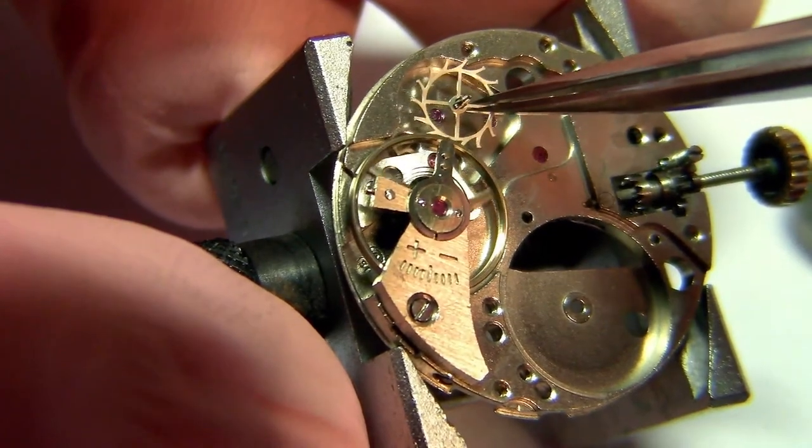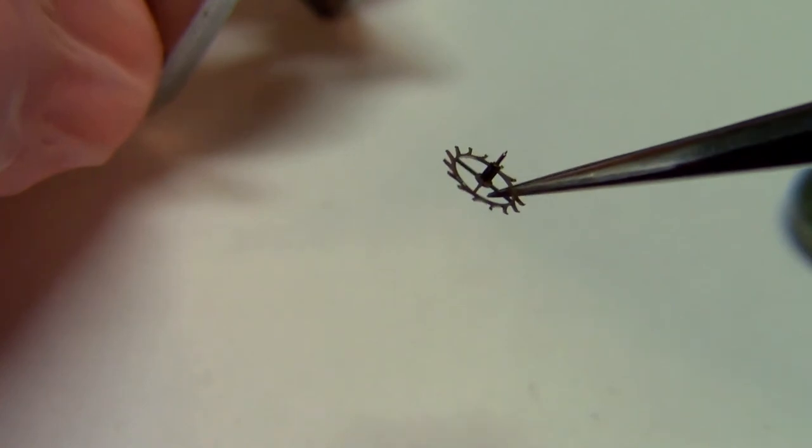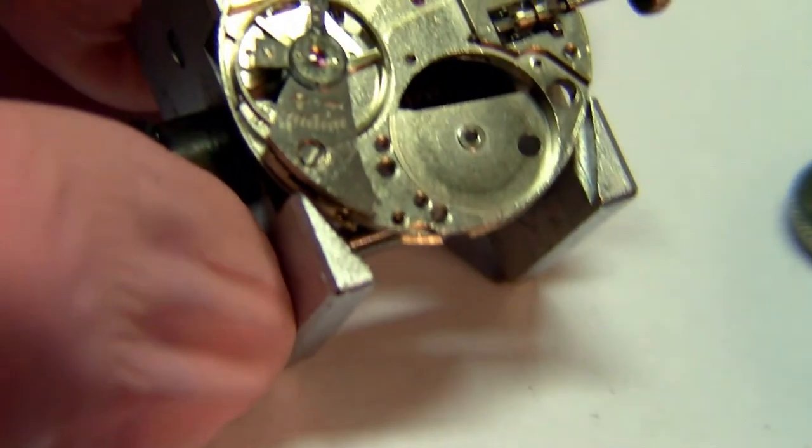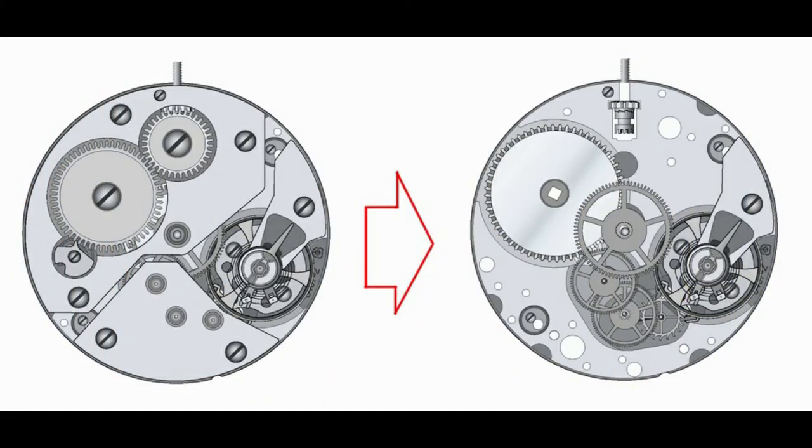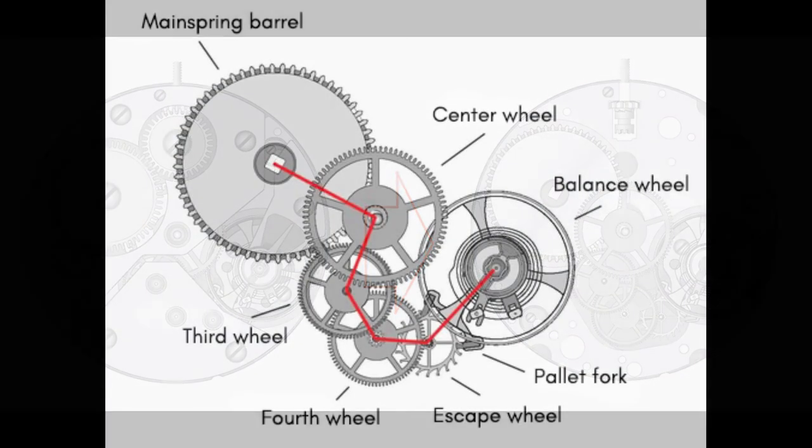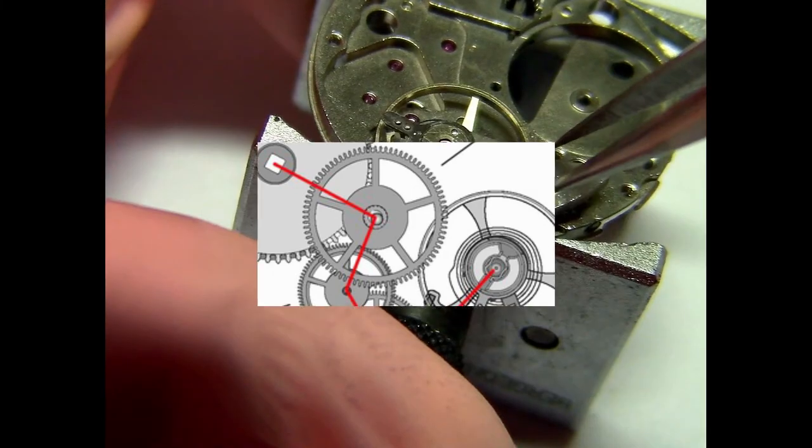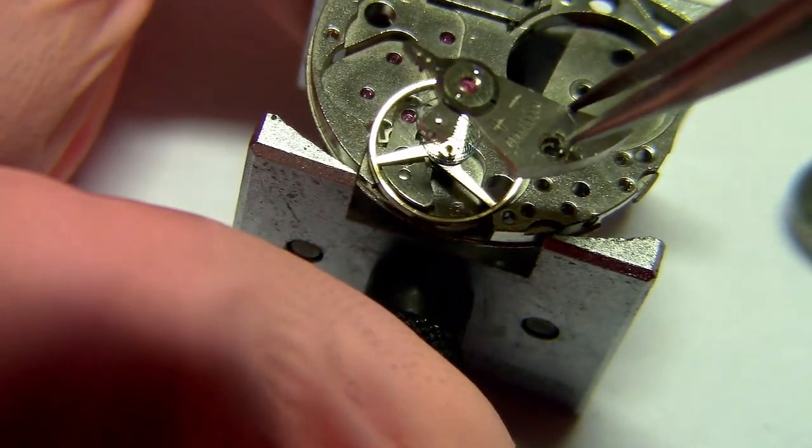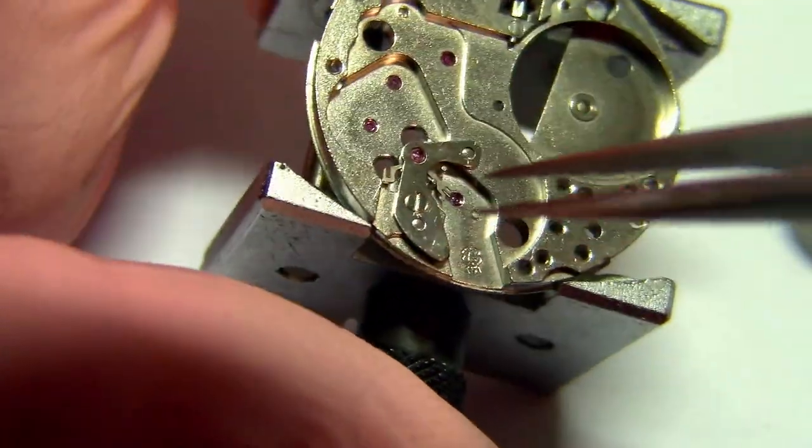All that we have here is the escapement itself, which is composed of the escapement wheel, the pallet fork, and the balance wheel that I will remove here. Removing the balance wheel, and all that is left is the pallet fork and its bridge. Now it's completely free.